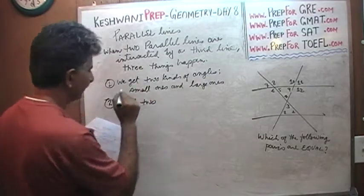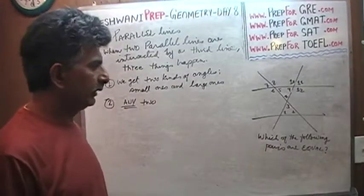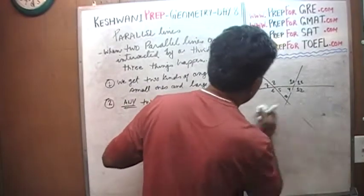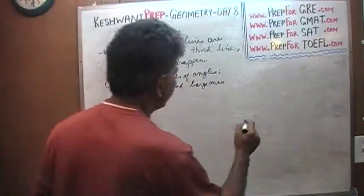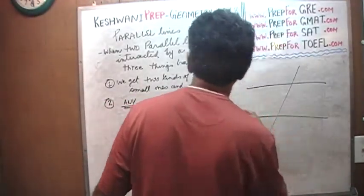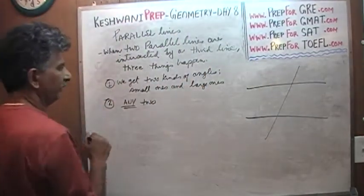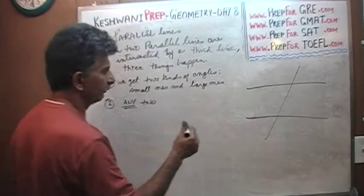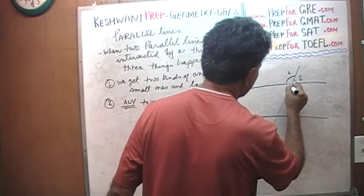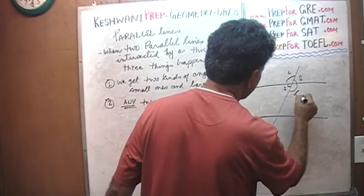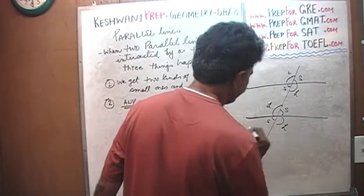Number two: any two angles — let me explain what I mean by that. When two parallel lines are intersected by a third line, three things happen. We get two kinds of angles: small ones and large ones. Watch this: a small one, a large one, a small one, a large one — alternating all the way around. You see?